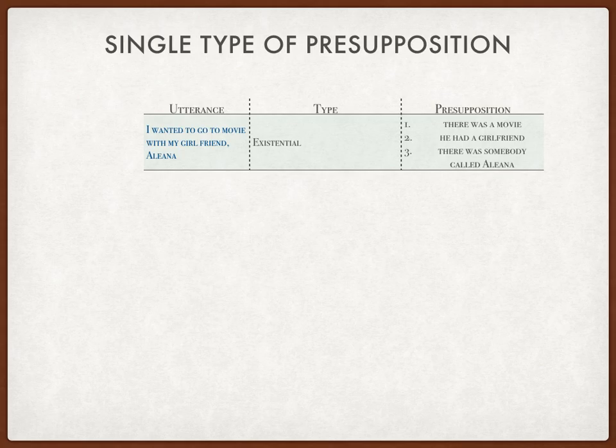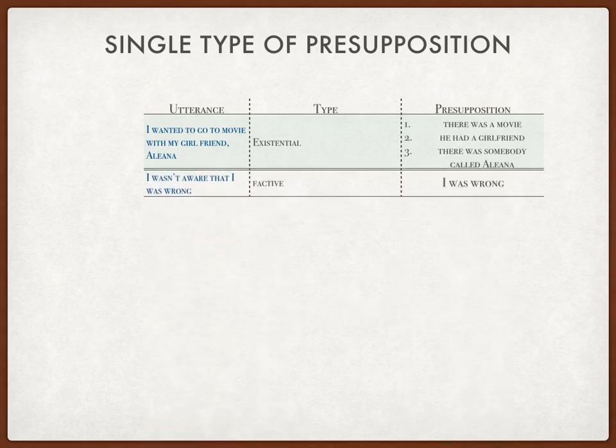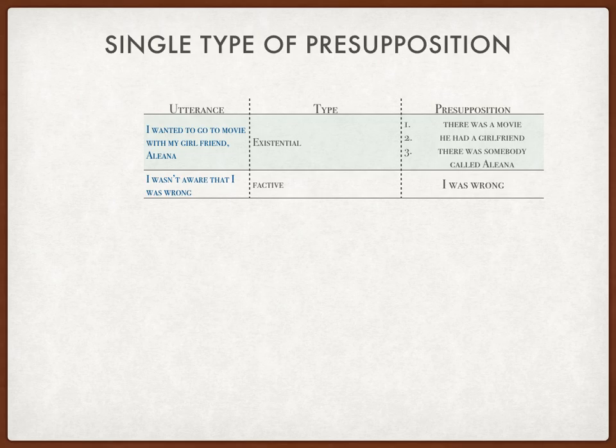From that, the presuppositions are: first, there was a movie; second, the speaker had a girlfriend; and last, because Aliana is known as a girl's name, there was somebody called Aliana.